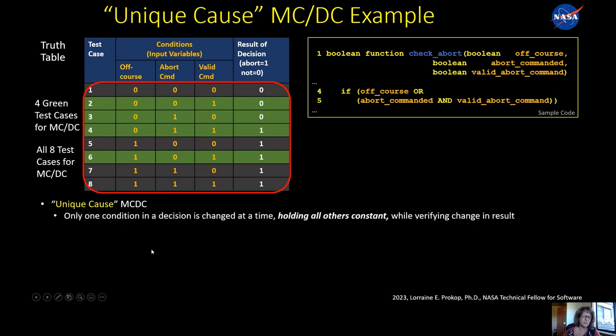So unique cause MCDC, this is the definition. Only one condition when you test it, only one condition in a decision is changed at a time and you keep the others constant while verifying that the result changed.